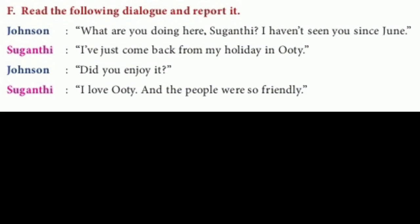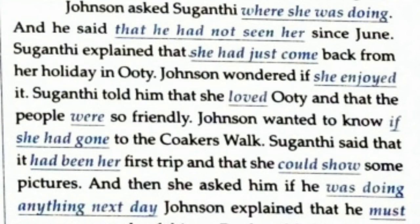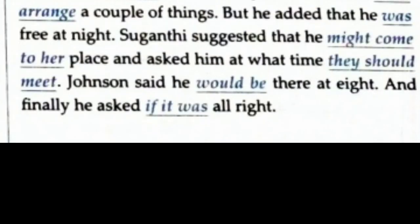Reported version: Johnson asked Suganti what she was doing and said that he had not seen her since June. Suganti explained that she had just come back from her holiday in Ooty. Johnson wondered if she had enjoyed it. Suganti told him that she loved Ooty and that the people were so friendly. Johnson wanted to know if she had gone to Cocos Walk. Suganti said that it had been her first trip and that she could show some pictures, and asked if he was doing anything the next day. Johnson explained that he must arrange a couple of things but added that he was free that night. Suganti suggested he might come to her place and asked at what time they should meet. Johnson said he would be there at 8 and asked if it was alright.